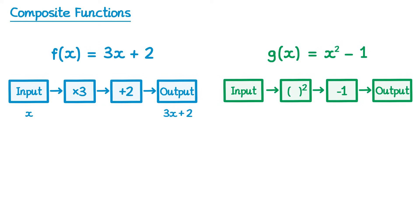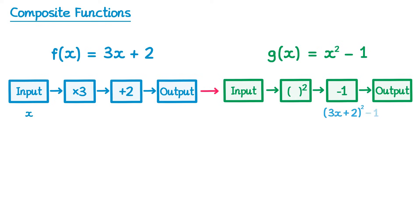For the next step we're going to connect the two function machines together to make one massive function machine. This means that the input for the next one is just the output from the previous one, so 3x plus 2. We take 3x plus 2 and square it, and then we take that and subtract 1. This would then be our output — so for this giant function machine, the input is x and the output is 3x plus 2 all squared take away 1.